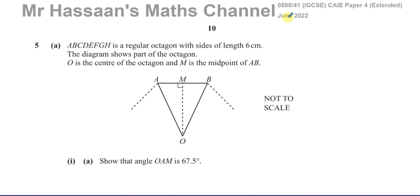This question is about a regular octagon, part of which is shown in the diagram: ABCDFGH. It's a regular octagon — that's an important word — it has 8 sides, and regular means all the angles and sides are the same length. O is the center of the octagon, and M is the midpoint of AB. We know that the length AB is 6 centimeters.